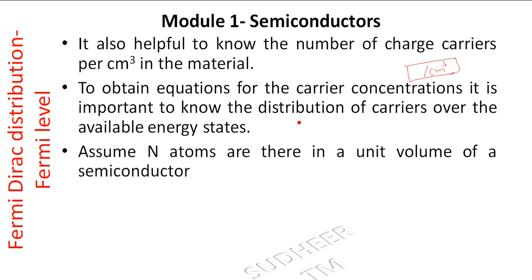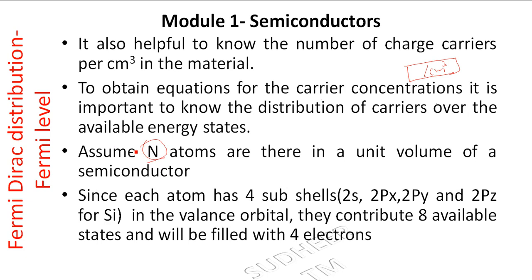We assume that N atoms are in a unit volume of a semiconductor. Since each silicon atom has subshells — 2s, 3s, 3px, 3py, and 3pz — they contribute eight available states, and these will be filled with four electrons.